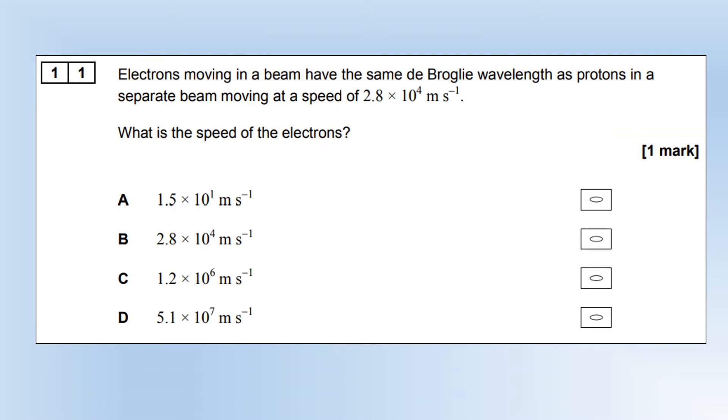Electrons moving in a beam have the same de Broglie wavelength as protons in a separate beam moving at a speed of 2.8 times 10 to the 4. What is the speed of the electrons? I'm going to make the two wavelengths equal to each other, cancel out the Planck's constant, rearrange to make the velocity of electrons the subject, plug the numbers in, and that gives us an answer of D.